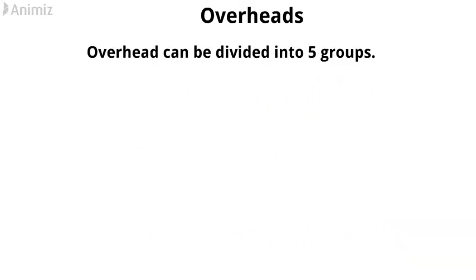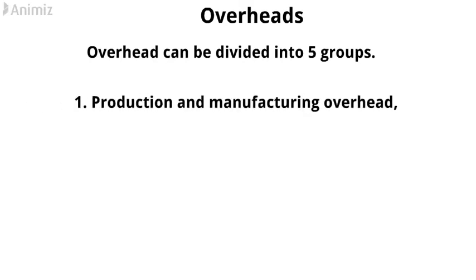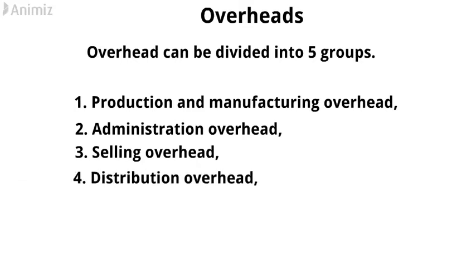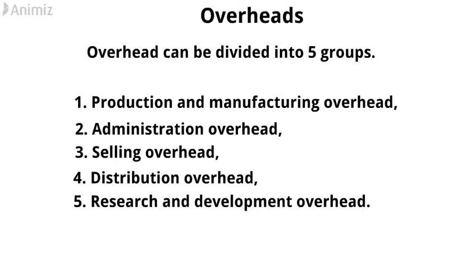Overhead can be divided into five groups: 1. Production and Manufacturing Overhead, 2. Administration Overhead, 3. Selling Overhead, 4. Distribution Overhead, and 5. Research and Development Overhead. Let's discuss each group separately.